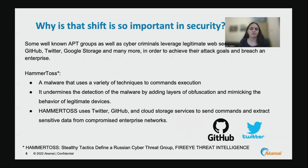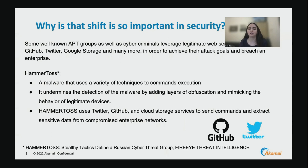So why is this shift so important in security? Some well-known APT groups, as well as cyber criminals, leverage legitimate web services such as GitHub, Twitter, Google Storage, and many more in order to achieve their attack goals and breach an enterprise. An example of such an attack is Hammertoss, a malware that uses a variety of techniques to execute commands. It tries to undermine its detection by adding layers of obfuscation and mimicking the behavior of legitimate users. Hammertoss uses Twitter, GitHub, and cloud storage services to relay commands and exfiltrate sensitive data from compromised networks. Such attacks that hide behind legitimate services are very hard to find, and enterprises must be aware and defend themselves from this kind of attack.